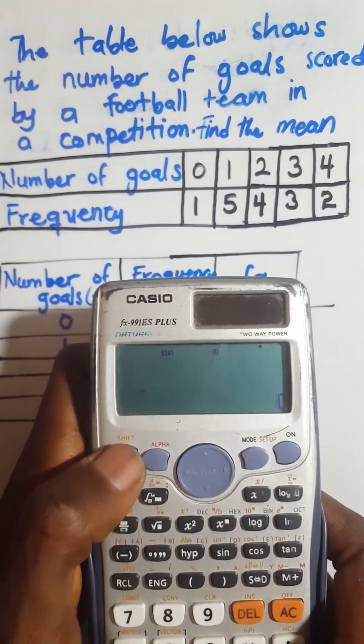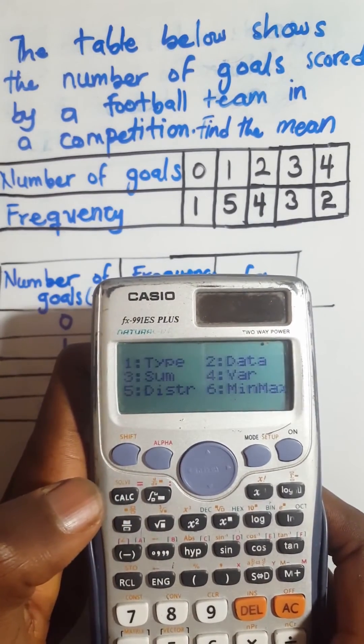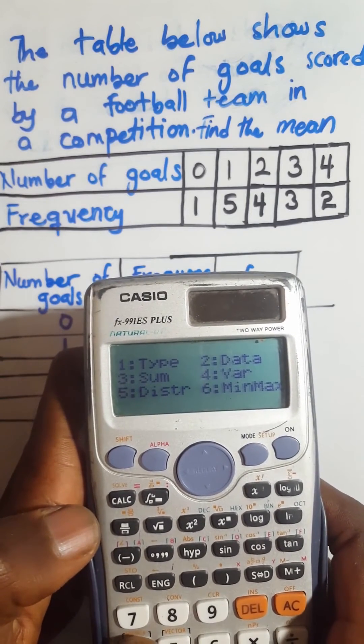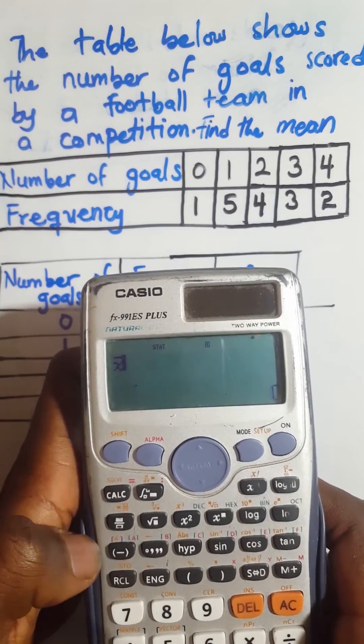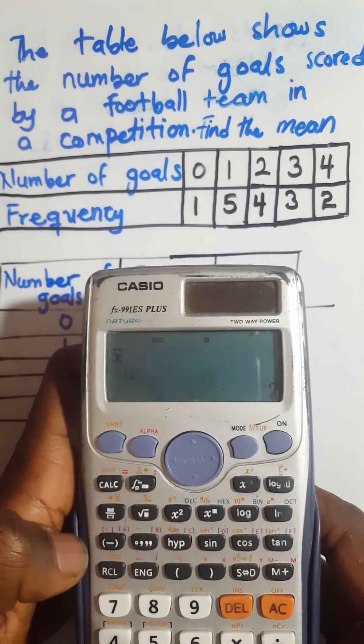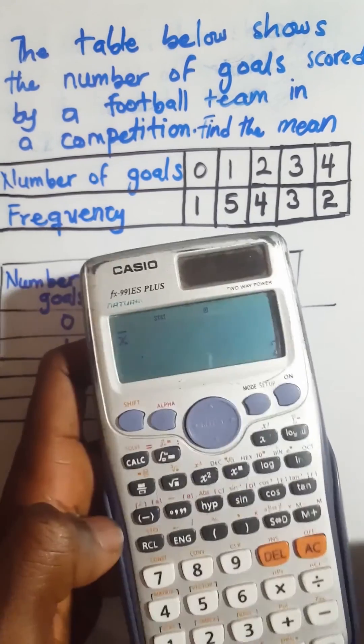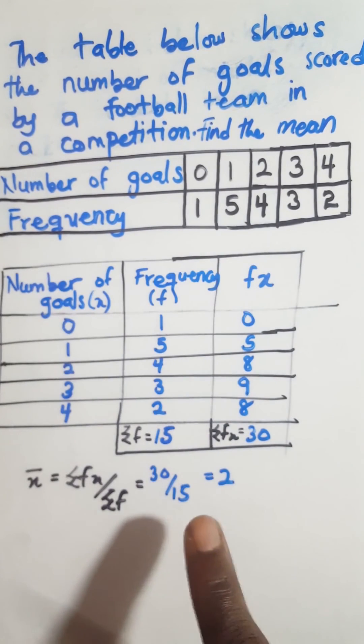Then to find the mean you press shift, you press stat, then you press VAR which is 4, then you choose the mean symbol which is 2. Now that is it, so just press equal to. Our answer is 2 on a calculator, so we have to also on our sheet. So that is it.